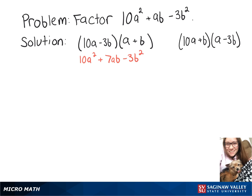Let's check this other one. So 10a times a is 10a squared again. Now we have negative 30ab plus ab, so that's negative 29ab minus 3b squared. So neither of those were the right way to factor it.